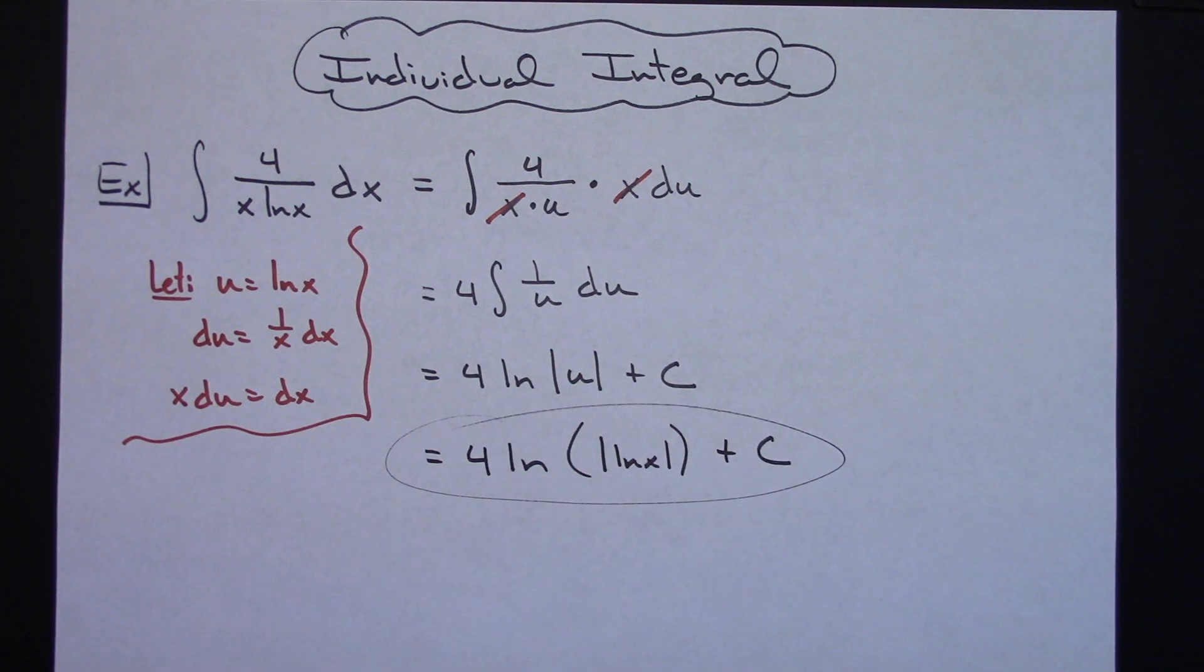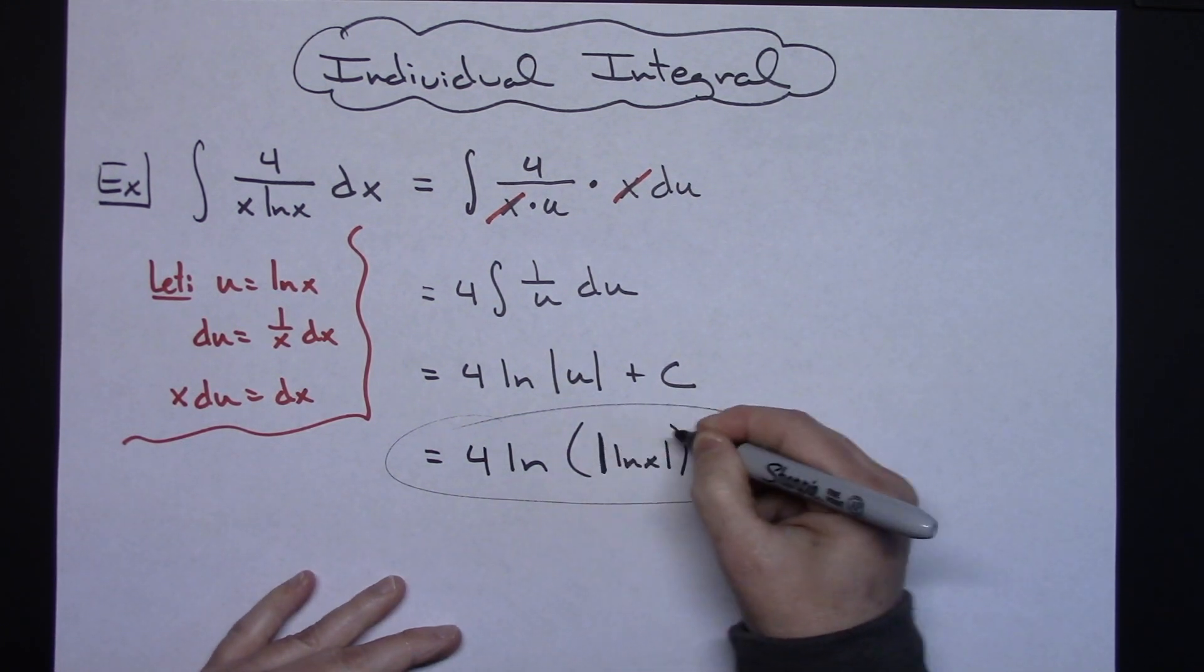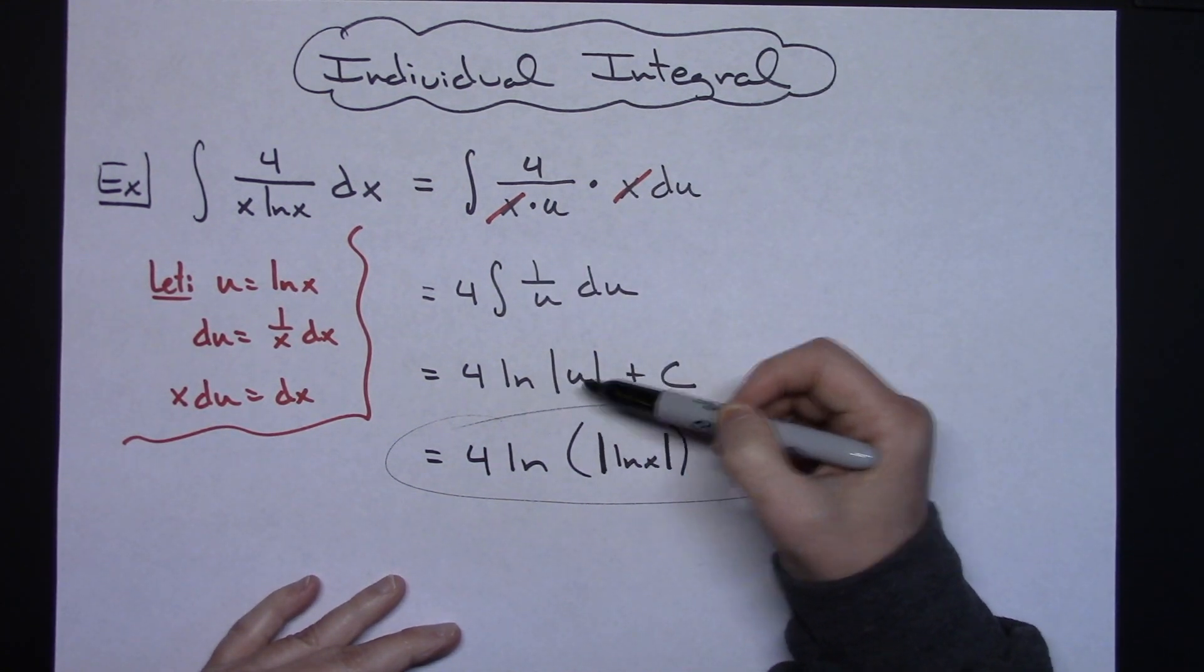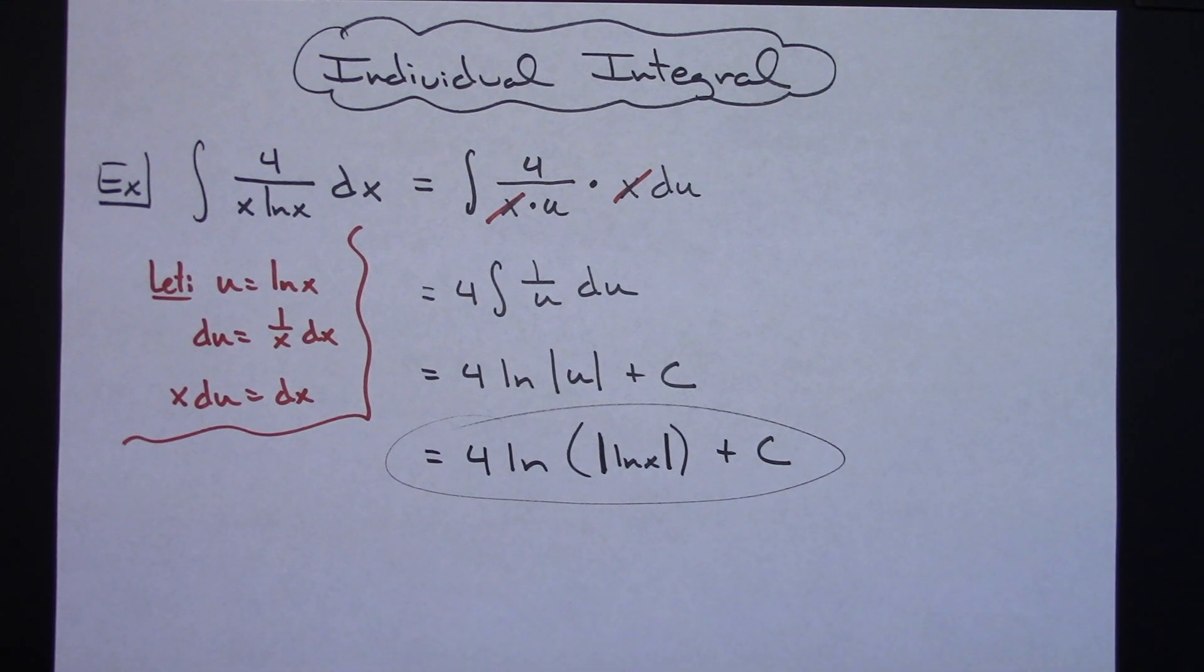So definitely just a simple straightforward u substitution there. And as long as you have that integral of 1 over u memorized to be that natural log absolute value of u, then it should be relatively straightforward.